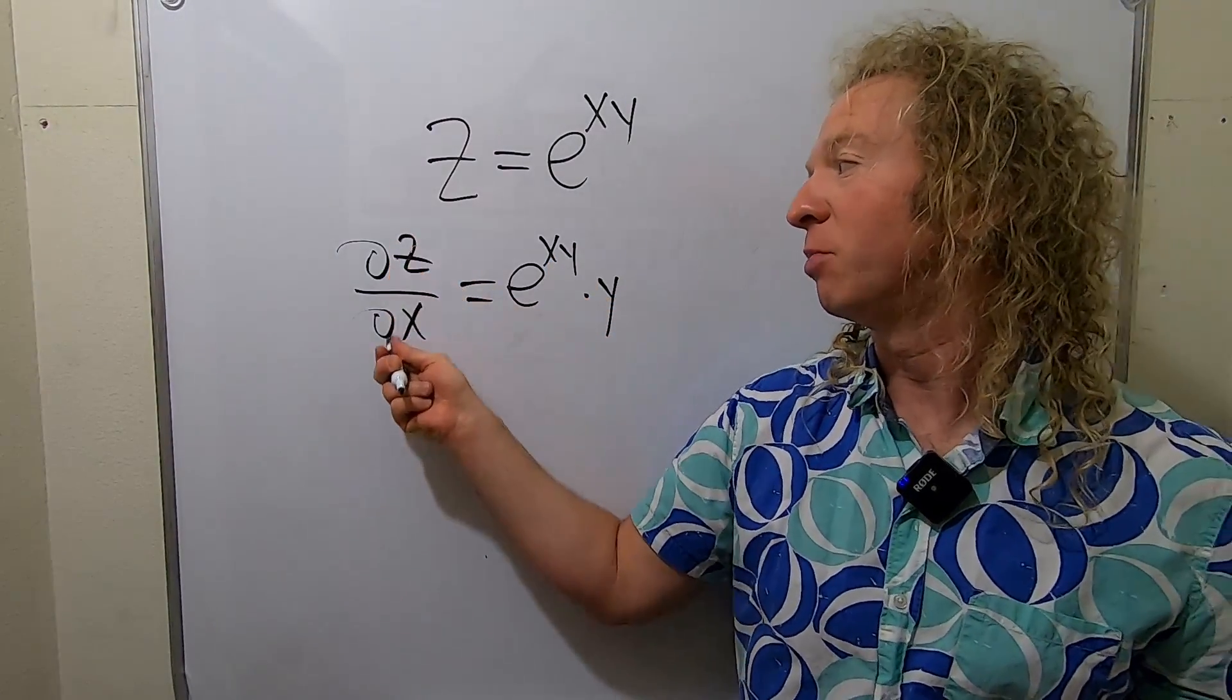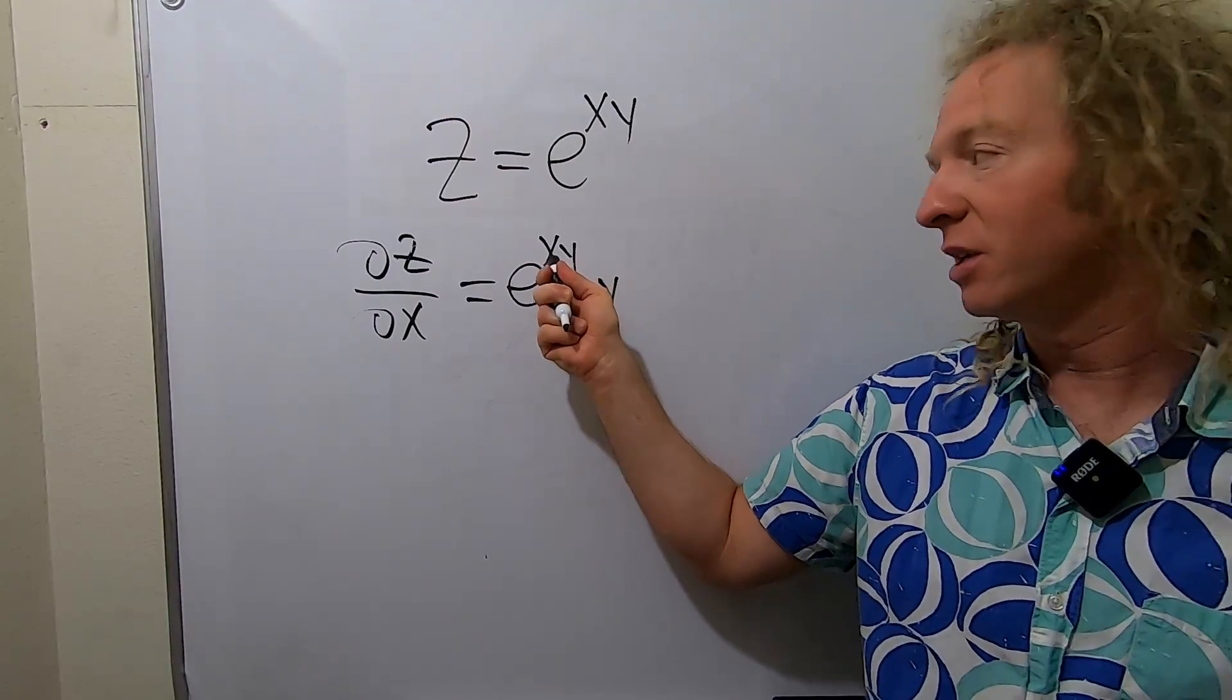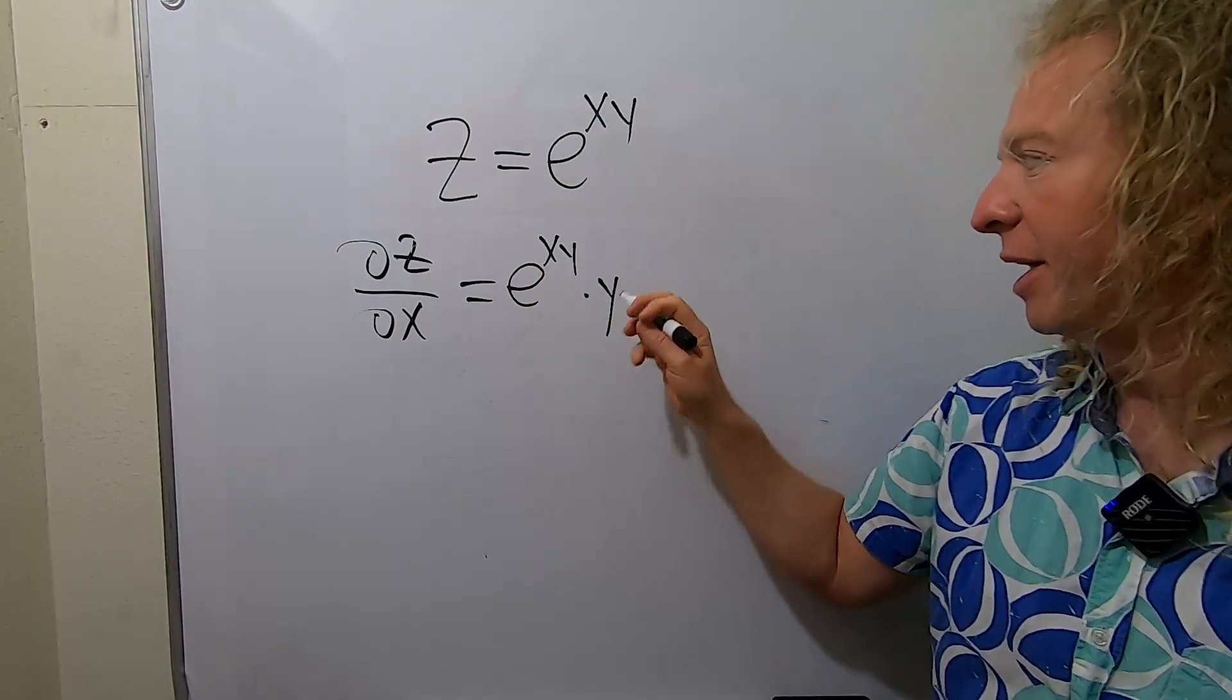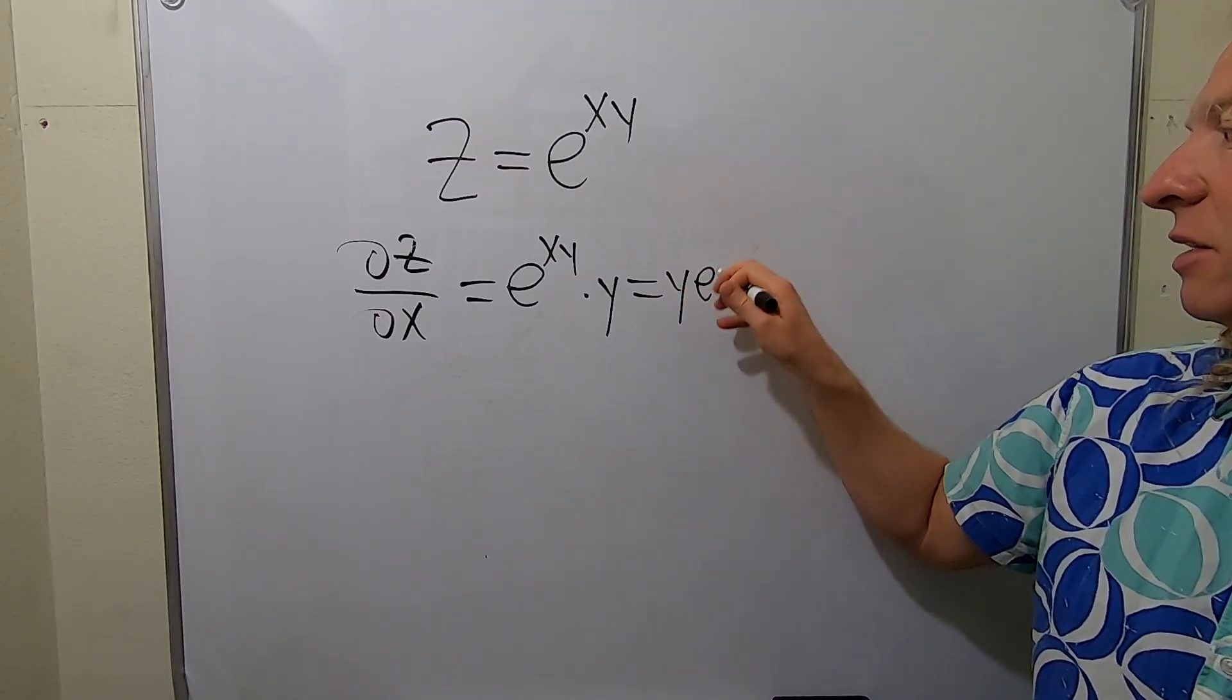Again, when you're taking the partial with respect to x, y is a constant. The derivative of x is 1, so it's like you get 1 times y, which is y. This is ye^(xy).